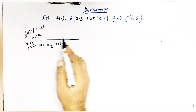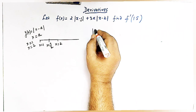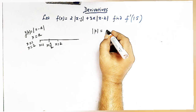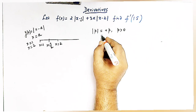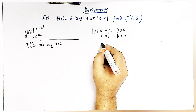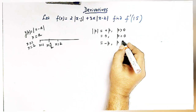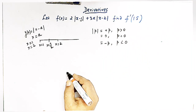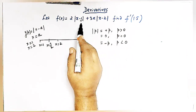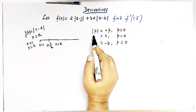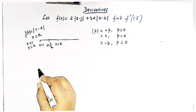Let us first see the definition of the mod function. Mod of p is defined as positive p whenever p is greater than 0, mod of p is 0 whenever p equals 0, and mod of p is negative p when p is less than 0. In this problem, we are going to use this definition to redefine the function f(x).